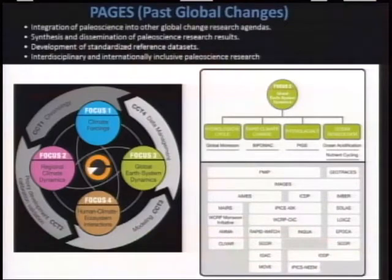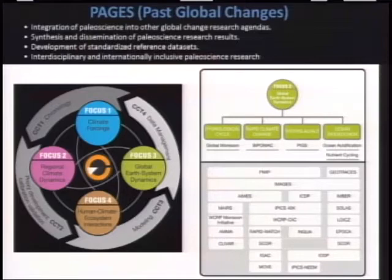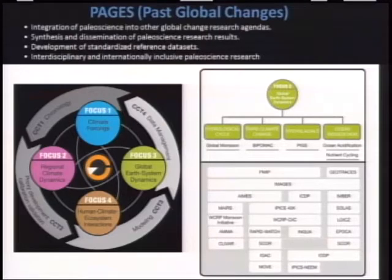As Torsten showed on Monday, we've organized our science plan around four foci: climate forcings, regional and climate dynamics, global and Earth system dynamics, and human-climate-ecosystem interactions. We also recognize there are cross-cutting themes that tie these foci together: chronology, proxy development, calibration and validation, modeling, and data management.